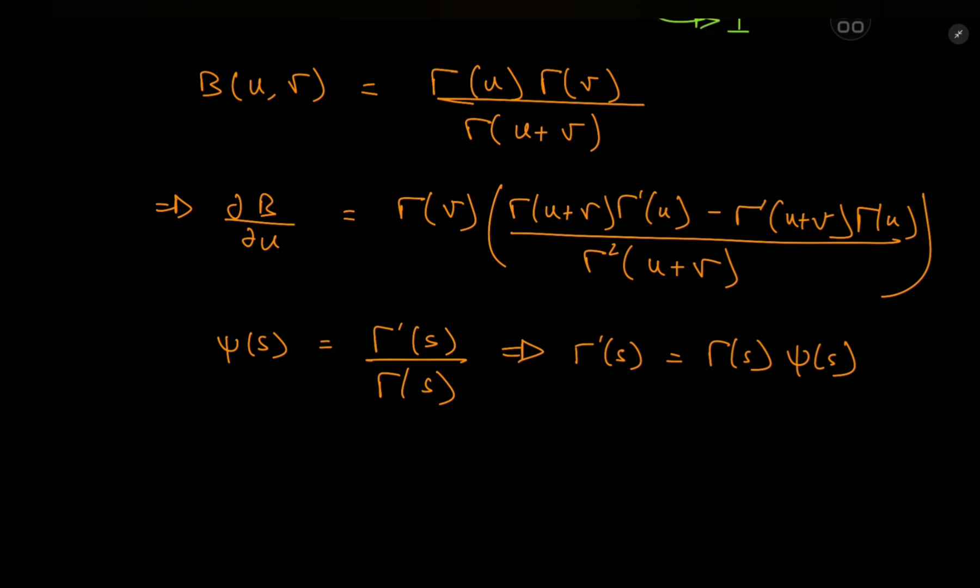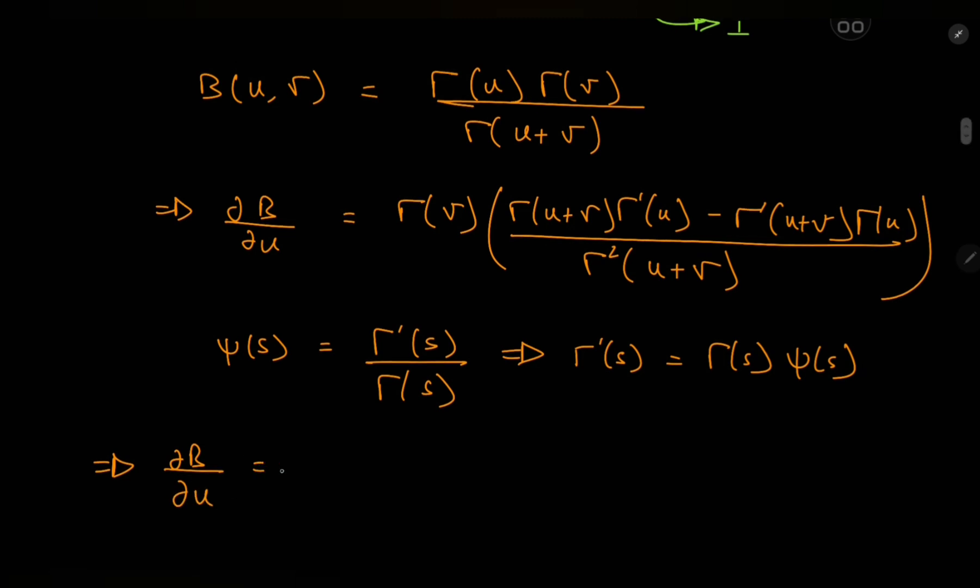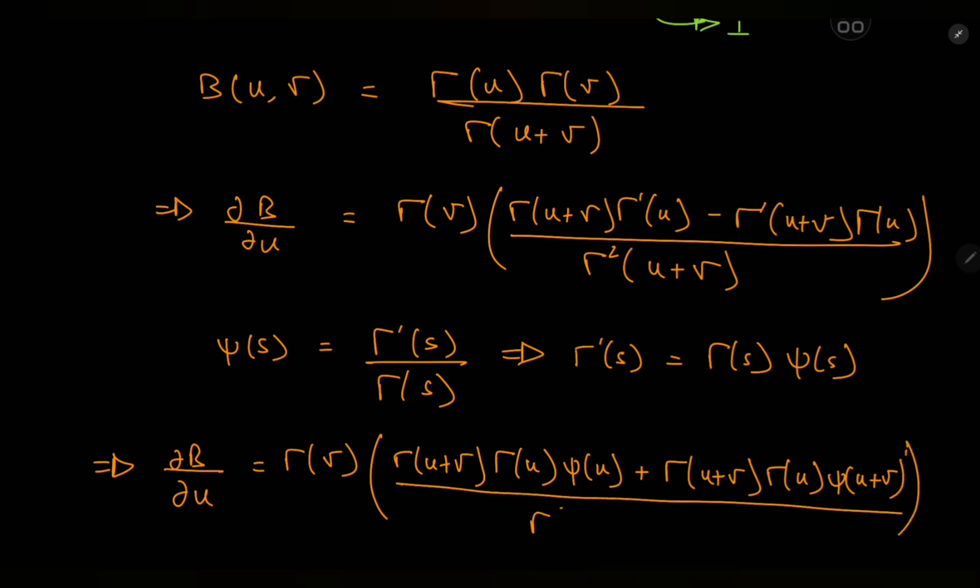So this implies that we have partial beta by partial u being equal to gamma v all times gamma u plus v times gamma u times digamma u plus gamma u plus v times gamma u times digamma u plus v and all of this is divided by gamma square - oh terribly sorry about that, gamma square u plus v.